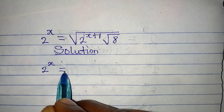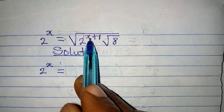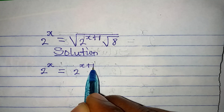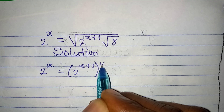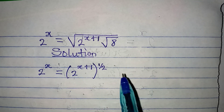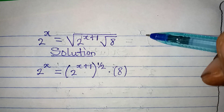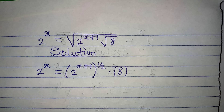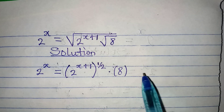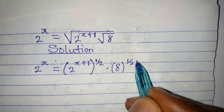On the left we have 2 to the power of x, and on the right, the square root of 2 to the x plus 1 becomes 2 to the power of (x+1) to the power of 1/2. Then we multiply by 8, which is also under the square root signs — two square root signs — so we have 2 to the power of 1/2 times 1/2.